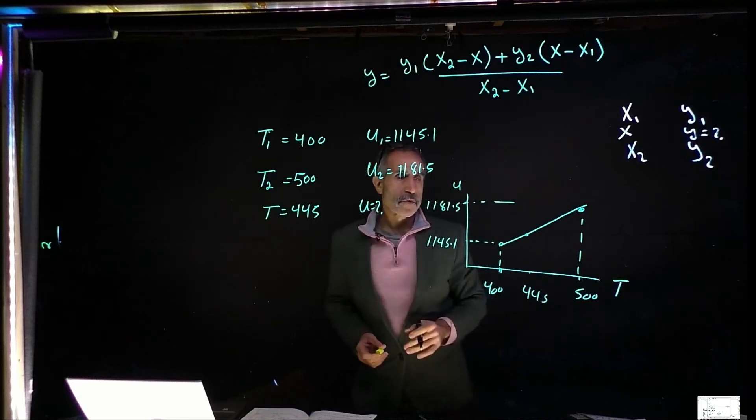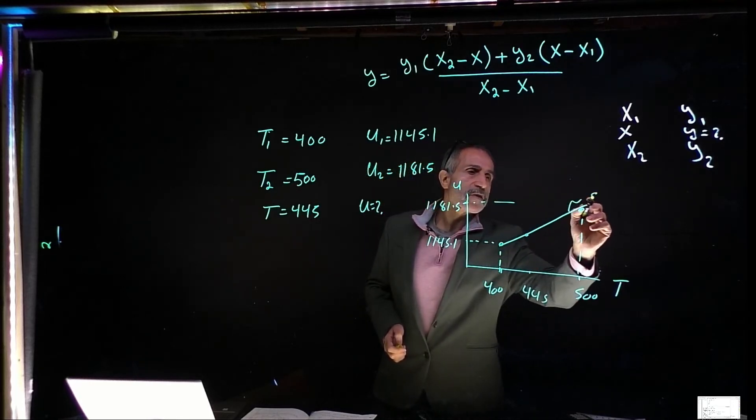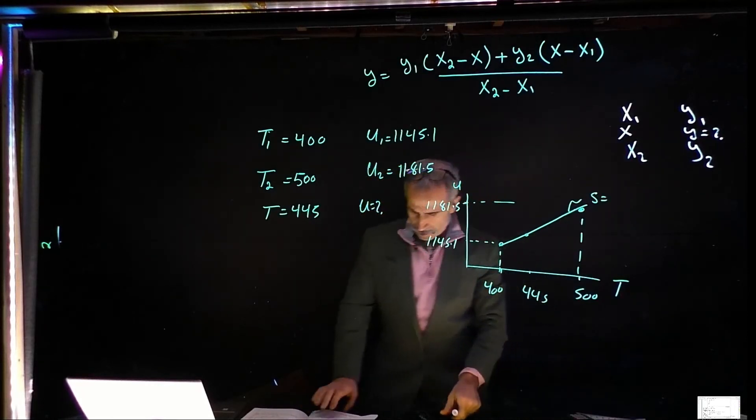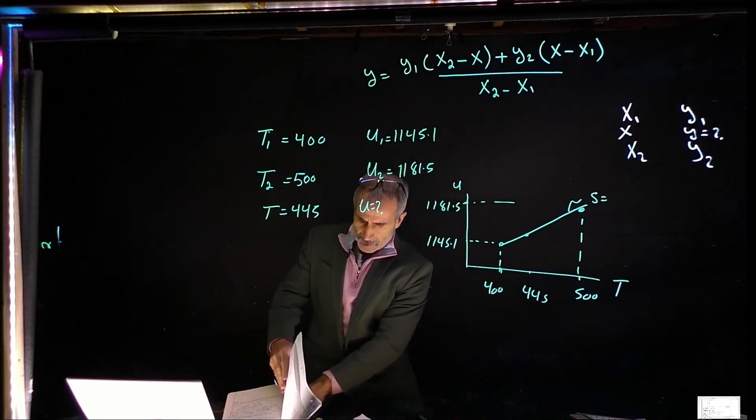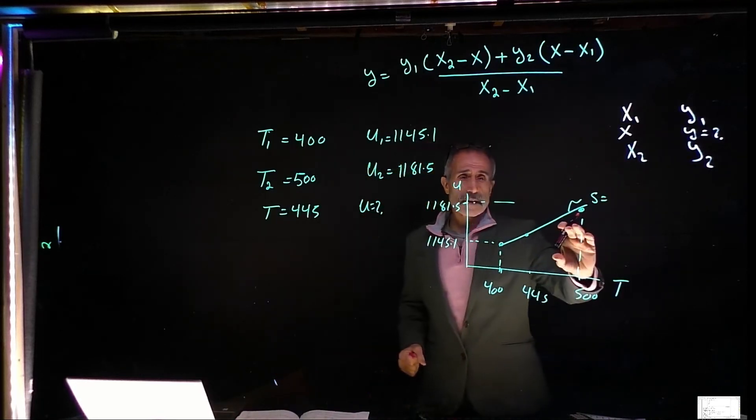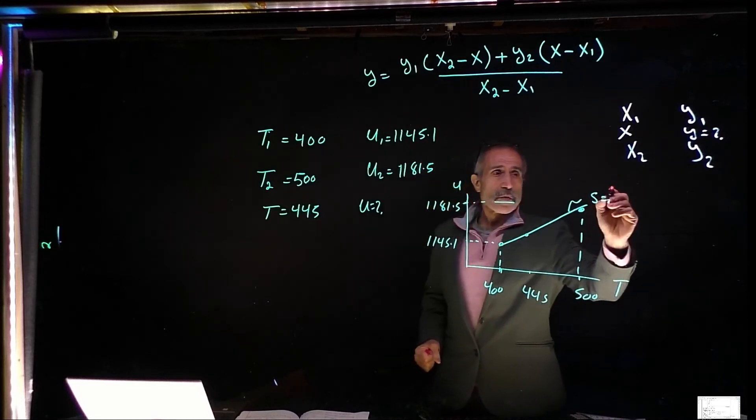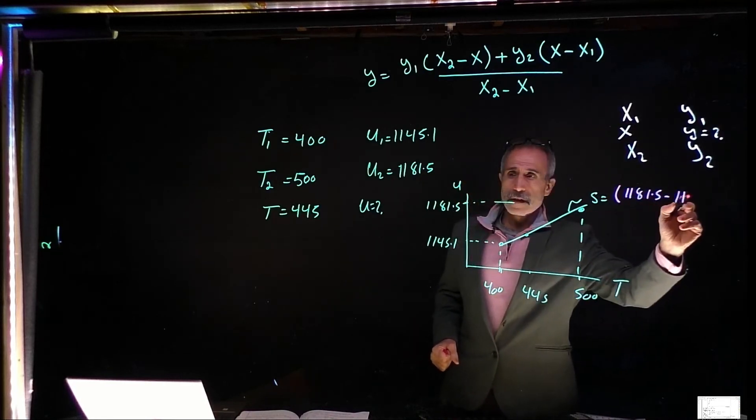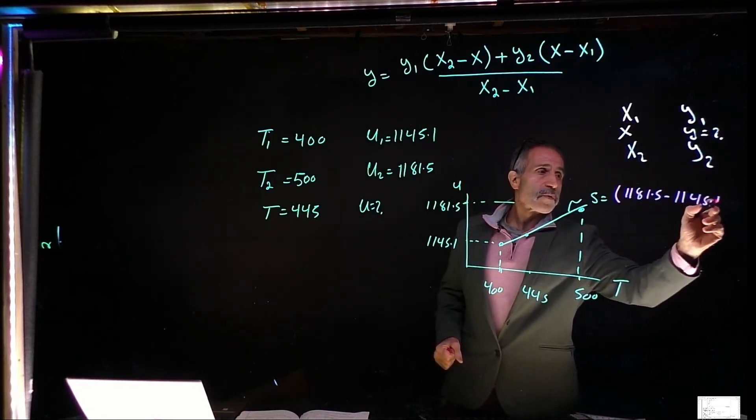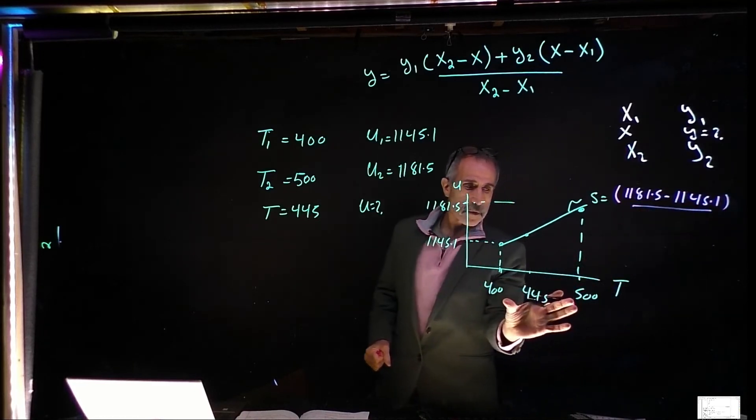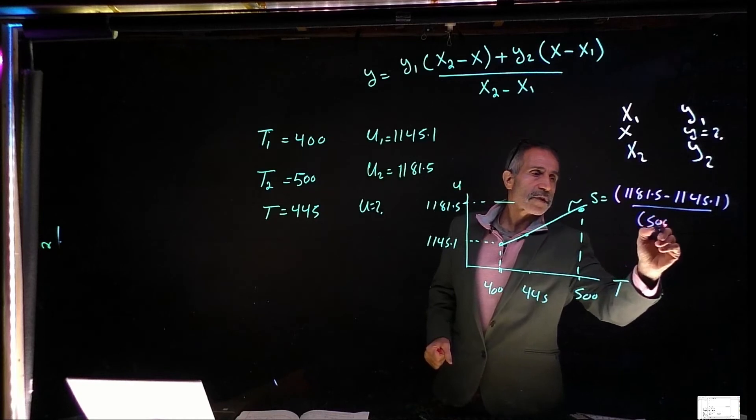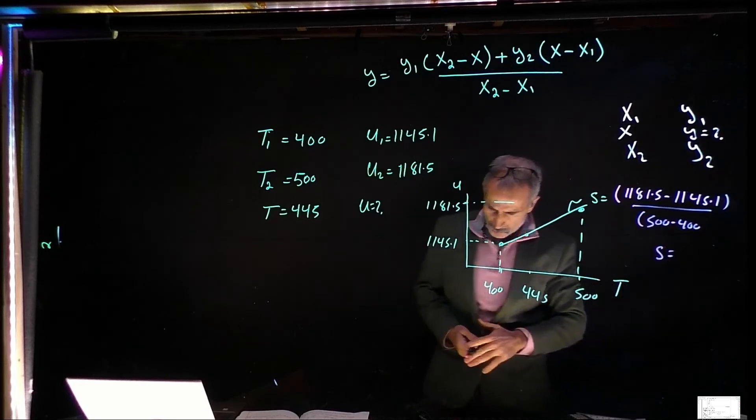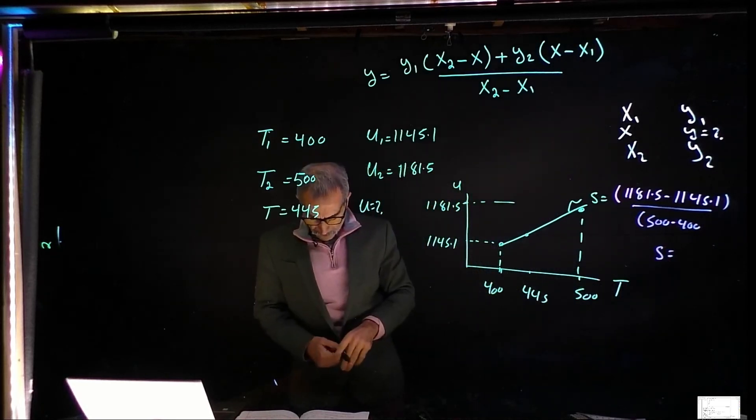Well, that's the equation. If you don't like the equation, we find the slope of this line. The slope of this line is rise over run, right? Rise is basically the difference between these two, which is 1181.5 minus 1145.1. And divide the whole thing by difference between these two, which is 500 minus 400. And my slope of my line comes out to 0.364.